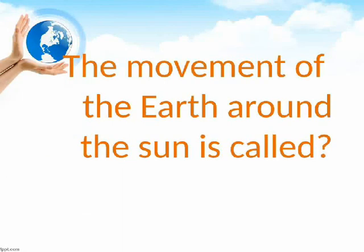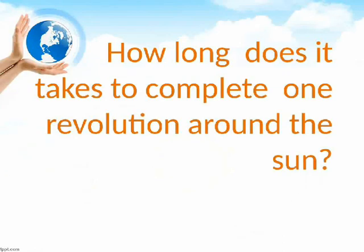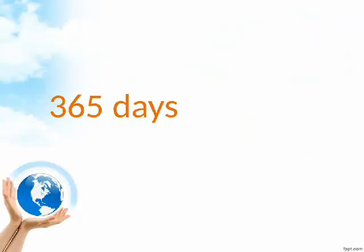The movement of the Earth around the Sun is called? Revolution. How long does it take to complete one revolution around the Sun? 365 days.